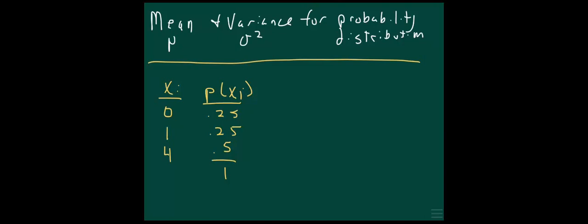So to compute the population mean, we'll have the sum of each x. But instead of adding them up and dividing by the number of them, since we have probabilities, we'll multiply each value of x by its corresponding probability. We could say divide by n, but that's always going to be 1 — it's the sum of the probabilities that would be in the bottom. So we just leave it as the sum of each x multiplied by its corresponding probability: x times the probability of x.